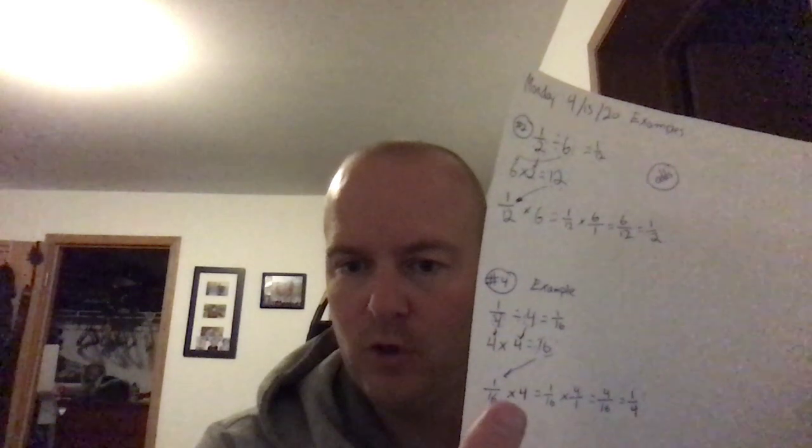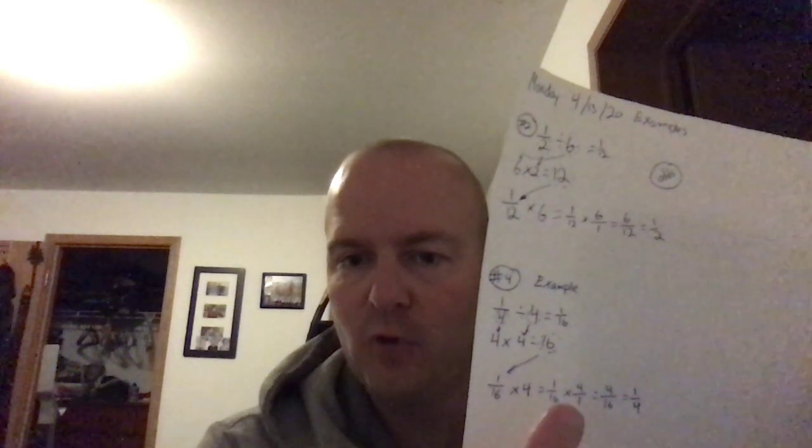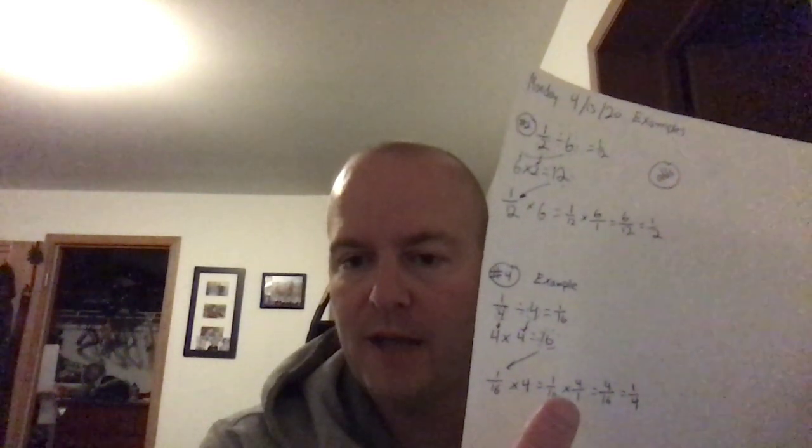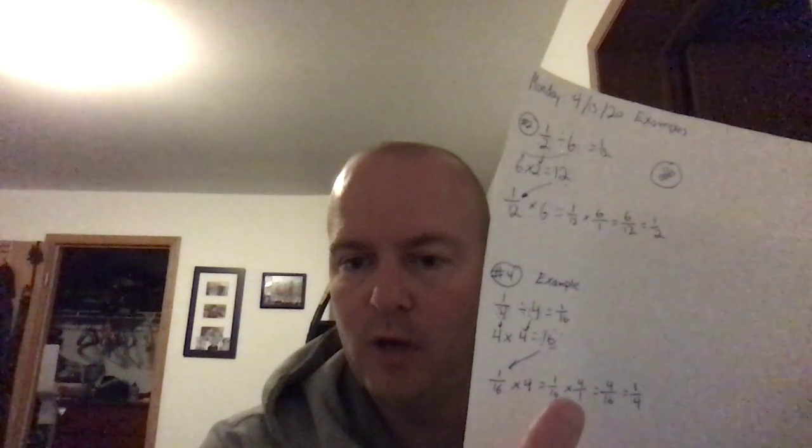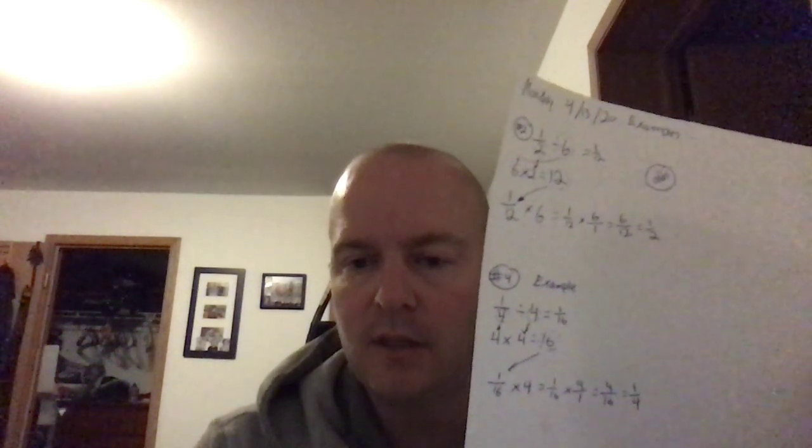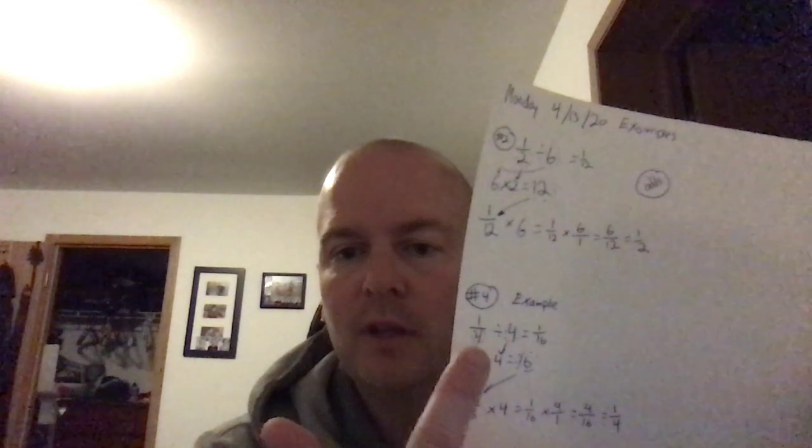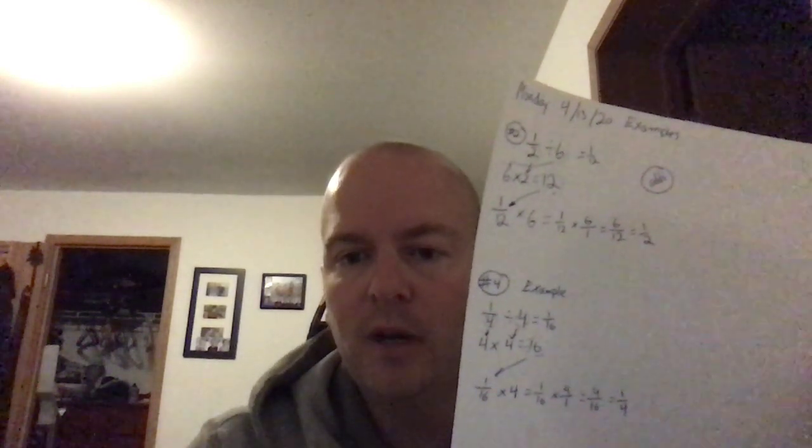One-sixteenth times four. Turn the four into a fraction, so put a denominator of one. Multiply straight across, you end up with four-sixteenths. You simplify that or reduce it, and you get one-fourth, which is what we have here. So one-fourth divided by four, and you end up with one-sixteenth.